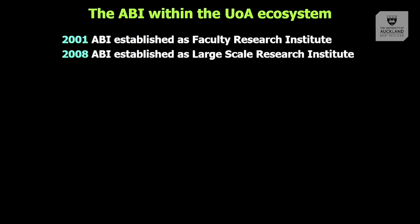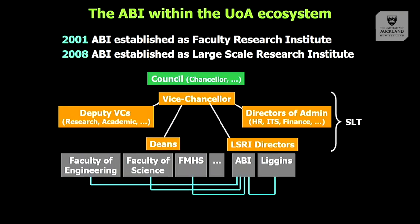Within the University of Auckland ecosystem, immediately after that series of students, we established a faculty research institute based in the engineering faculty and closely linked with the Department of Engineering Science. Then in 2008 we established a large-scale research institute which made us independent of any given faculty. That's how we sit now, with the ABI and the Liggins being the two large-scale research institutes in the university, sitting alongside the faculties.